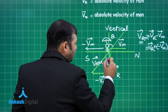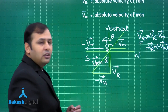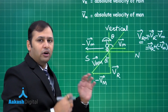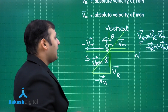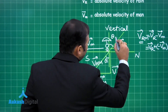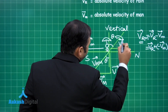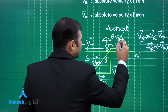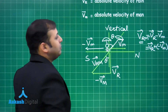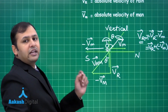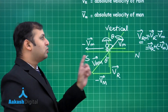The rain appears to fall at angle theta from the vertical. So in order to stay dry, the person must tilt the umbrella to this new direction — at an angle theta from the vertical. The umbrella must be tilted towards the direction the person is running.